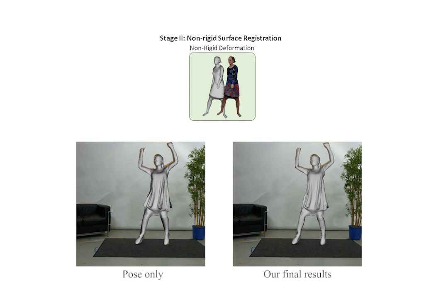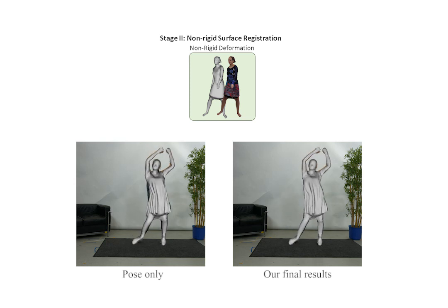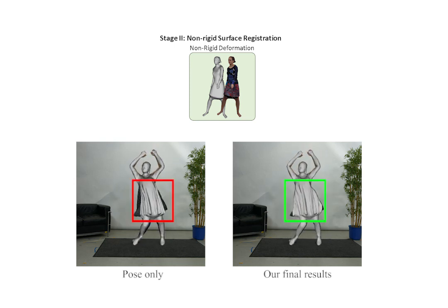Therefore, in our second stage, dense non-rigid 3D deformation of the surface is captured by minimizing a template-to-image alignment energy designed for real-time performance.